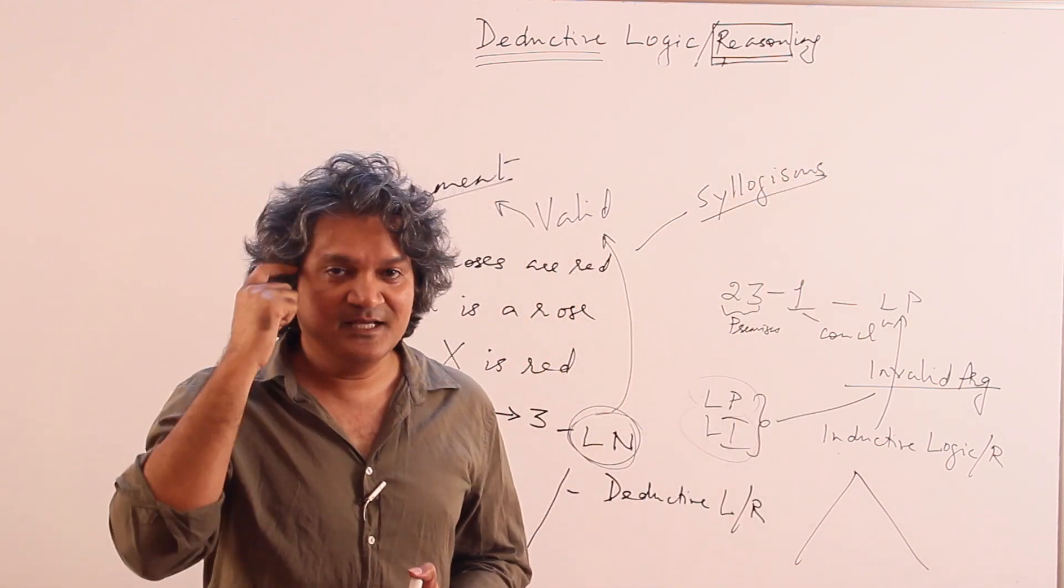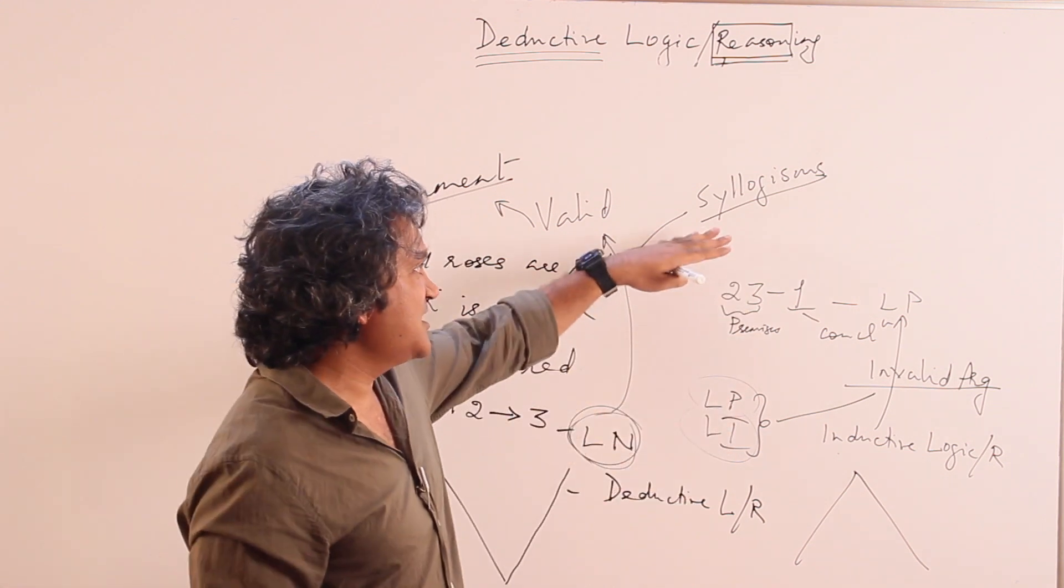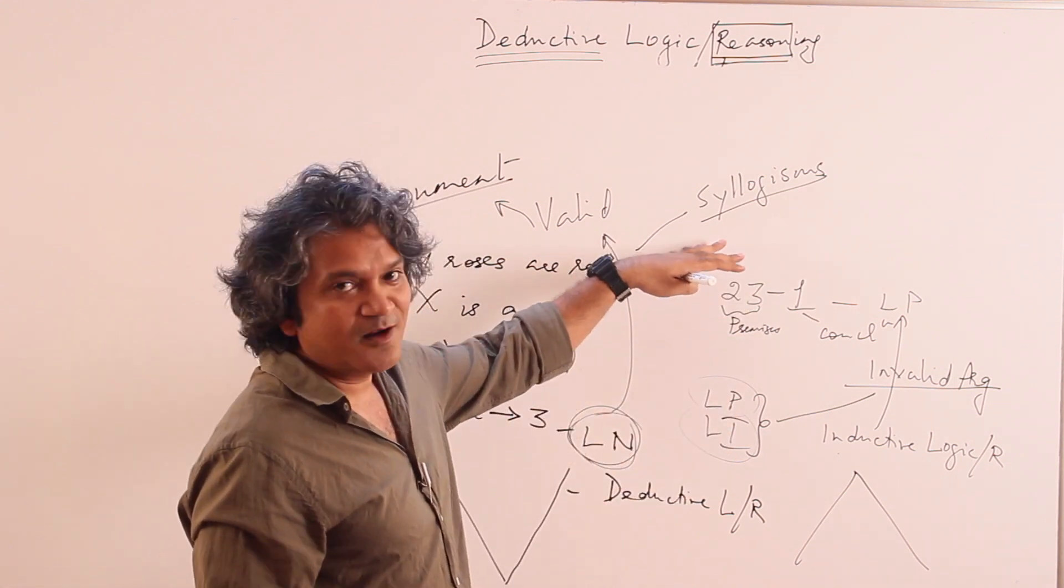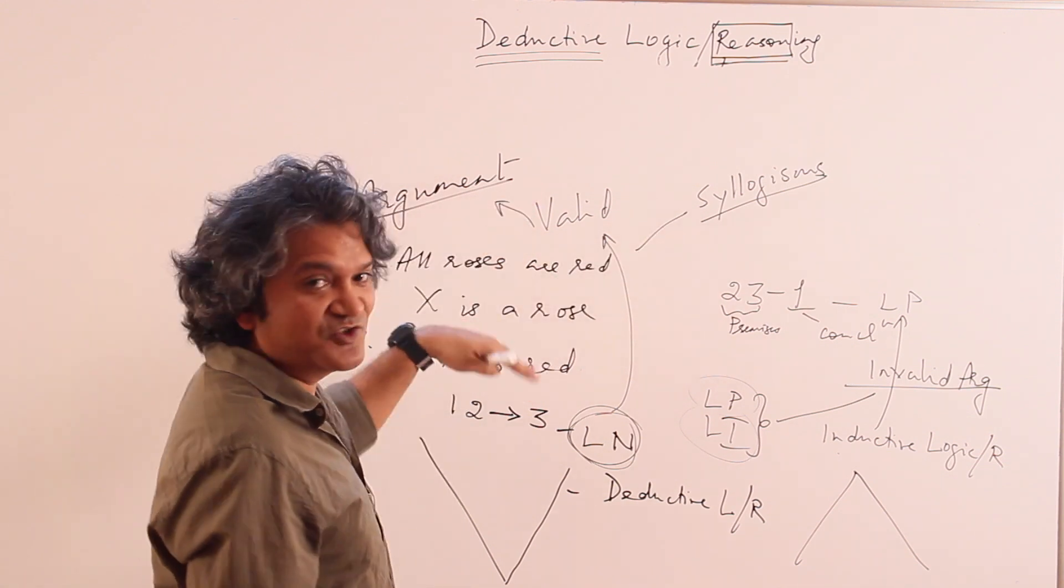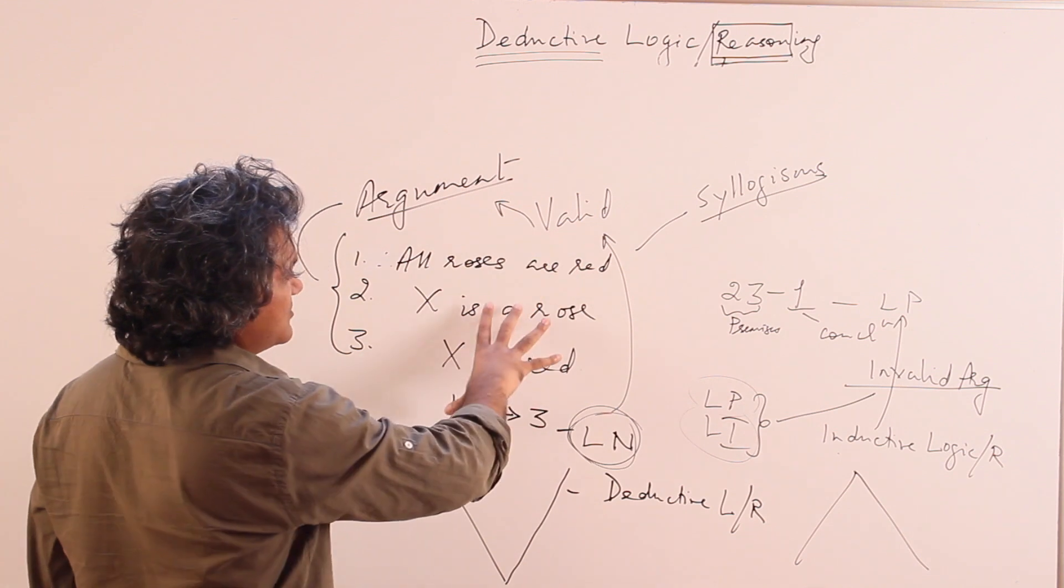Syllogisms. Aristotle is the person who came up with them first, around more than 2000 years back, ancient Greek philosopher. He came up with syllogistic form of reasoning. So they are also known as syllogisms.